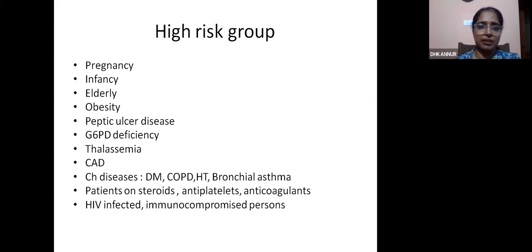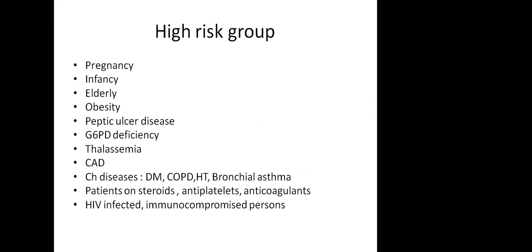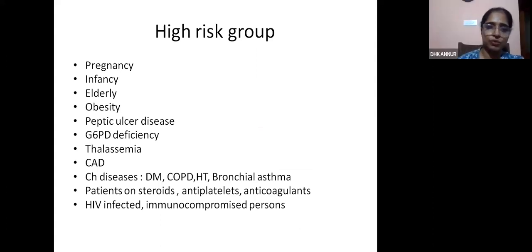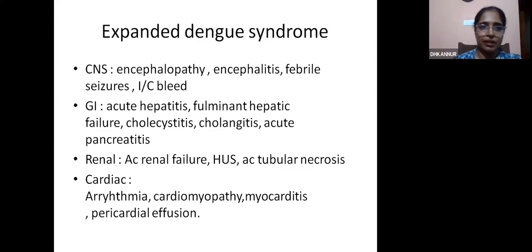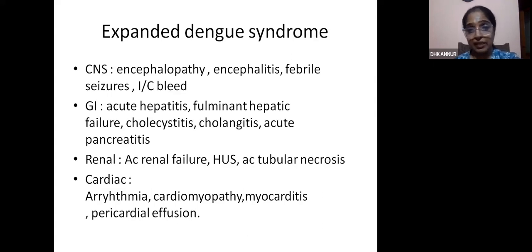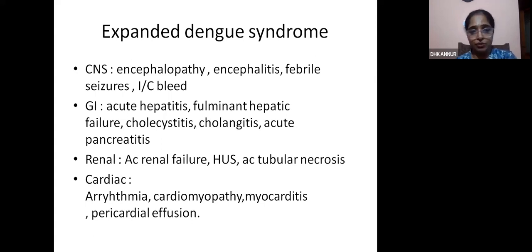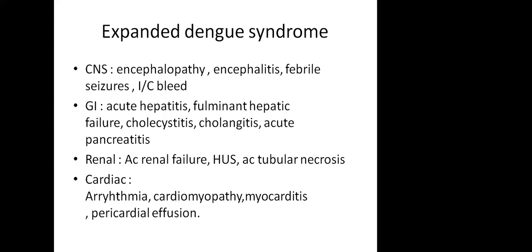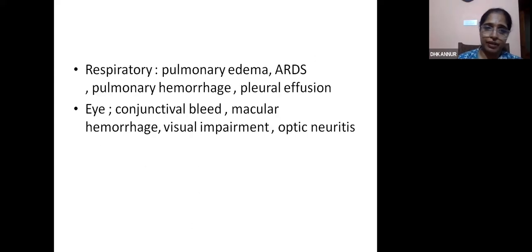High risk groups include those with comorbidities — these patients must be watched carefully. Expanded dengue syndrome is dengue with involvement of other organs: CNS involvement such as encephalitis, febrile seizures, intracranial bleed, encephalopathy; hepatic involvement such as acute hepatitis, hepatic failure, cholangitis, pancreatitis; renal involvement such as acute renal failure, hemolytic uremic syndrome, acute tubular necrosis; cardiac arrhythmias, cardiomyopathy, myocarditis, pericardial effusion; and respiratory involvement including pulmonary edema, ARDS, pulmonary hemorrhage, and pleural effusion.